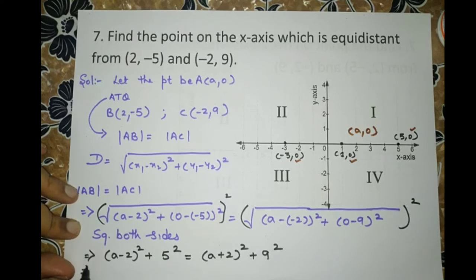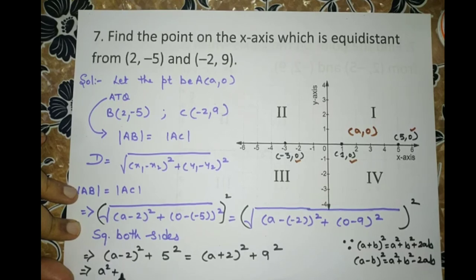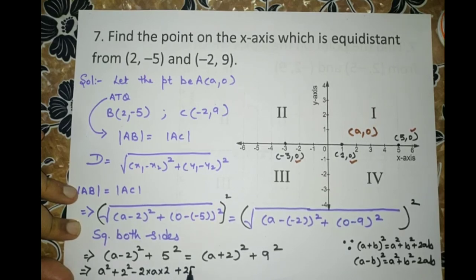So here we will use the identities A plus B whole square and A minus B whole square, which we have studied in class 8th also. So it is A square plus B square plus 2AB. And similarly, A minus B whole square is A square plus B square minus 2AB. So this is A square minus 4A plus 4 plus 25 equals A square plus 4A plus 4 plus 81.